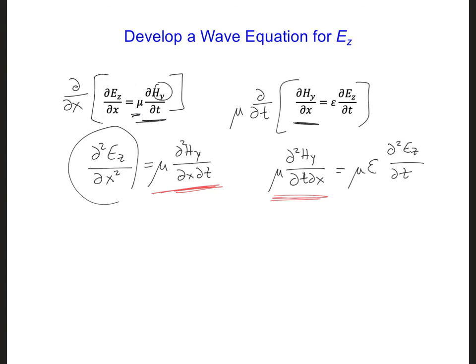So I'm going to take this. So the second spatial derivative of Ez is going to be equal to this, mu epsilon, the second time derivative. Oh, and that's supposed to have a second derivative there. What we've developed here is a wave equation for the Ez component.